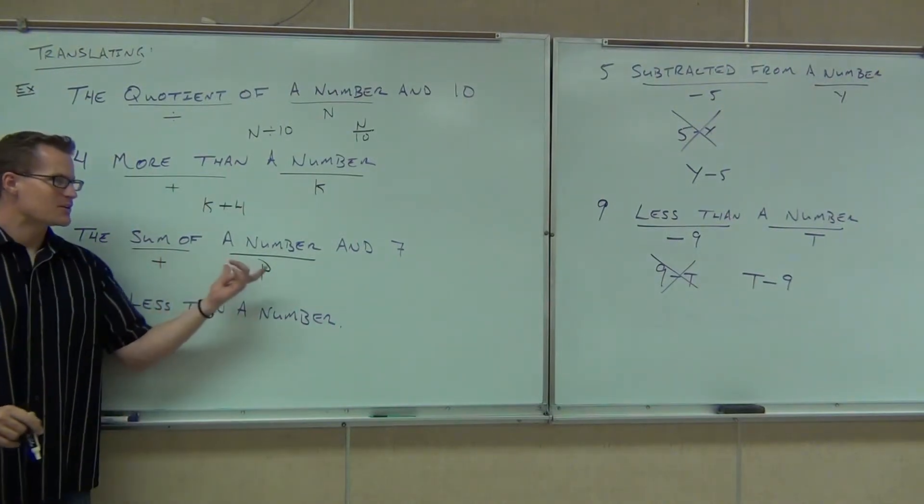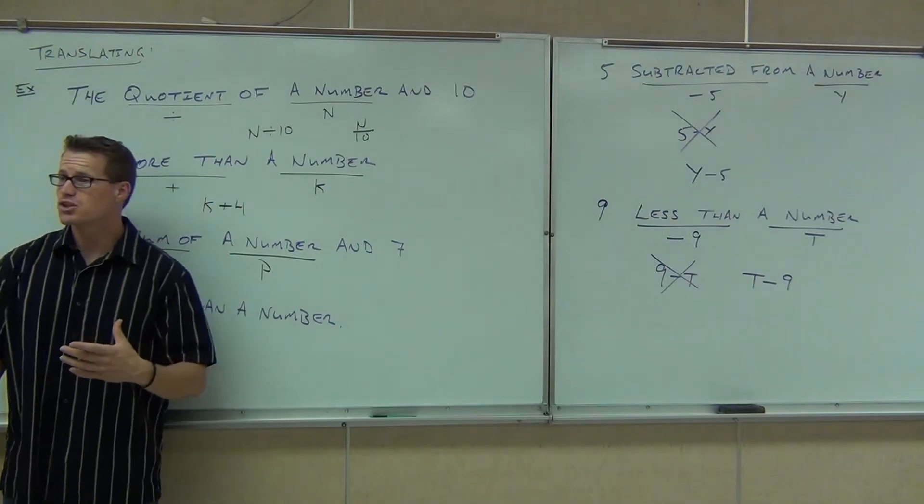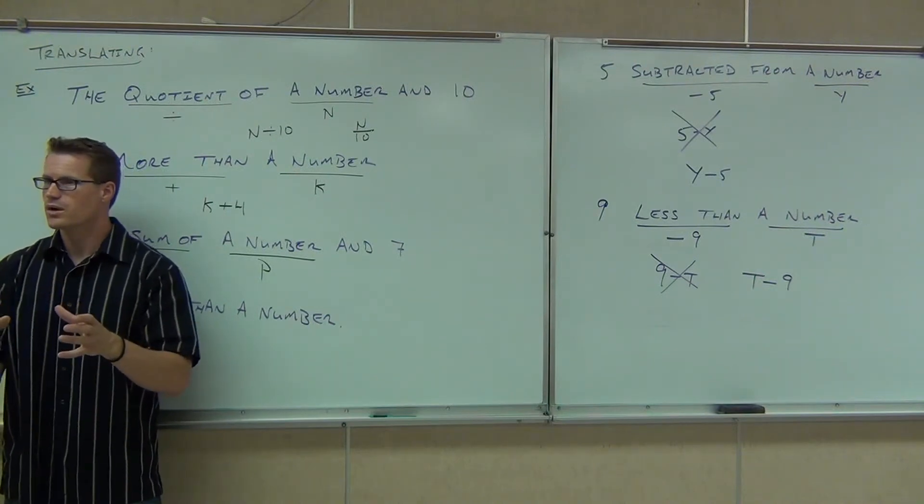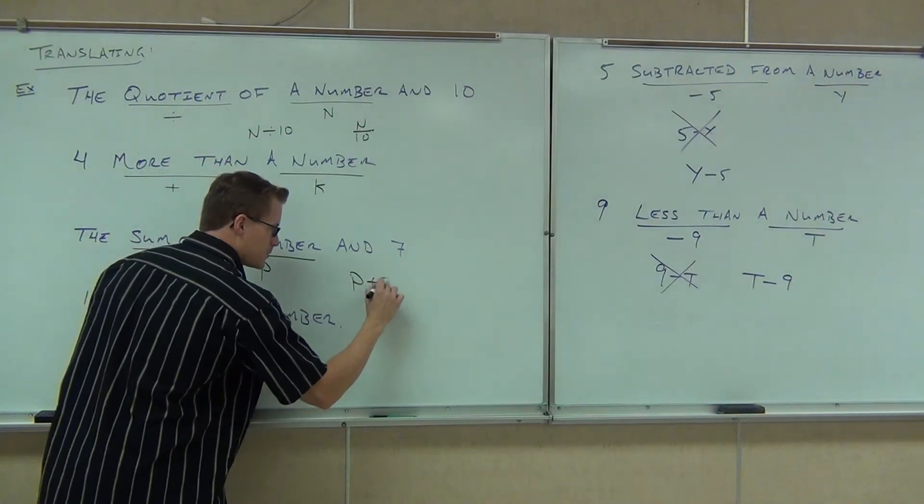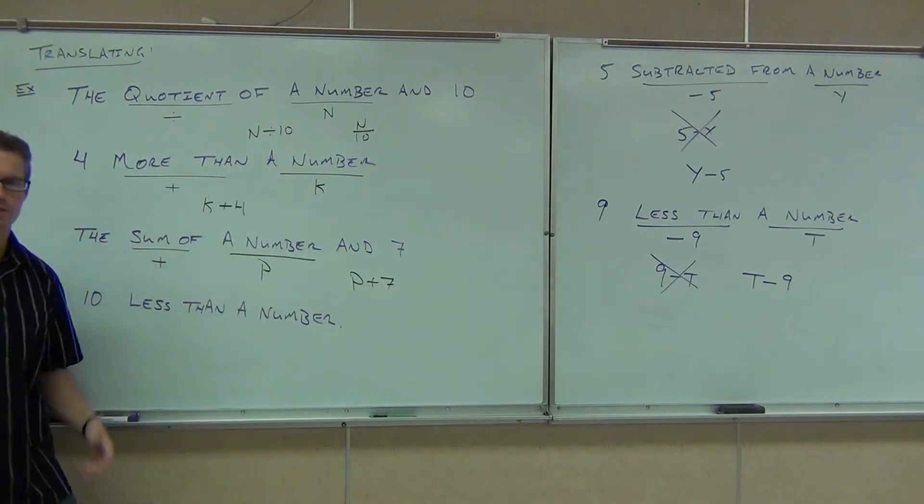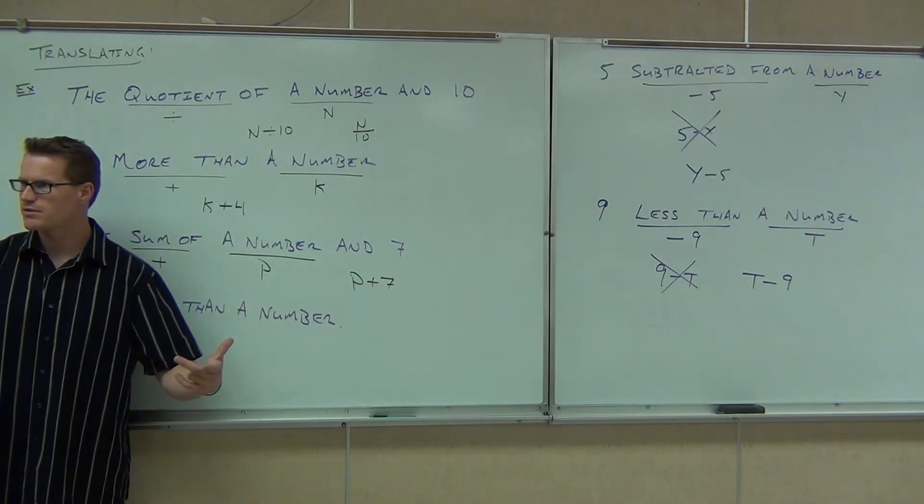So we've got the sum of a number and 7. A sum means addition. Now, the sums mean you're doing this in order. So we're just going to put p plus 7. It goes in the correct order like we think that it should. Did you get p plus 7? Yeah.